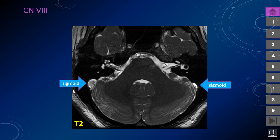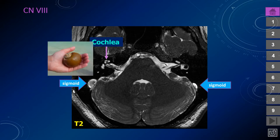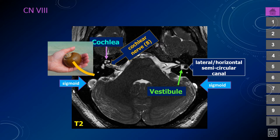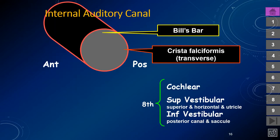Looking at the posterior fossa on this heavily T2-weighted image — this could be a FIESTA or CISS sequence — we can see the sigmoid sinuses, the cochlea, named for its snail shape. We can see the cochlear portion of the eighth nerve heading into the modiolus, the vestibule, the horizontal semicircular canal, and the basal turn of the cochlea on the opposite side. There is CSF inside the internal auditory canal, and we can see the cranial nerves entering through that CSF space into the IAC.